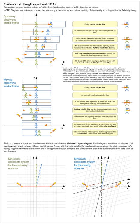t prime equals t minus vx over c squared, divided by the square root of 1 minus v squared over c squared. x prime equals x minus vt, divided by the square root of 1 minus v squared over c squared. y prime equals y. z prime equals z, where c is the speed of light.